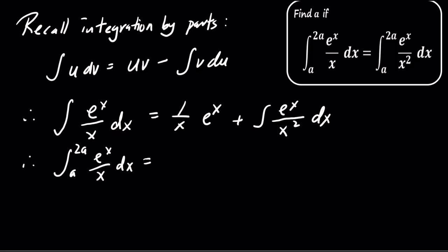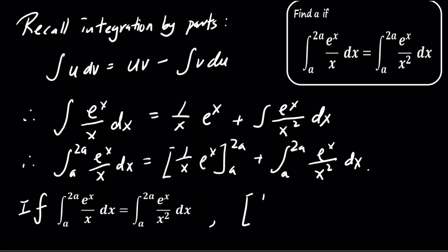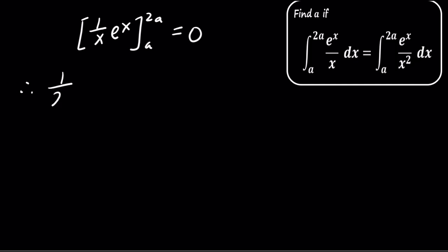Now, we can move to the next step. Next, evaluate both sides of the equation from A to 2A. This simplifies to e^(2A)/(2A) minus e^a/a equals 0.